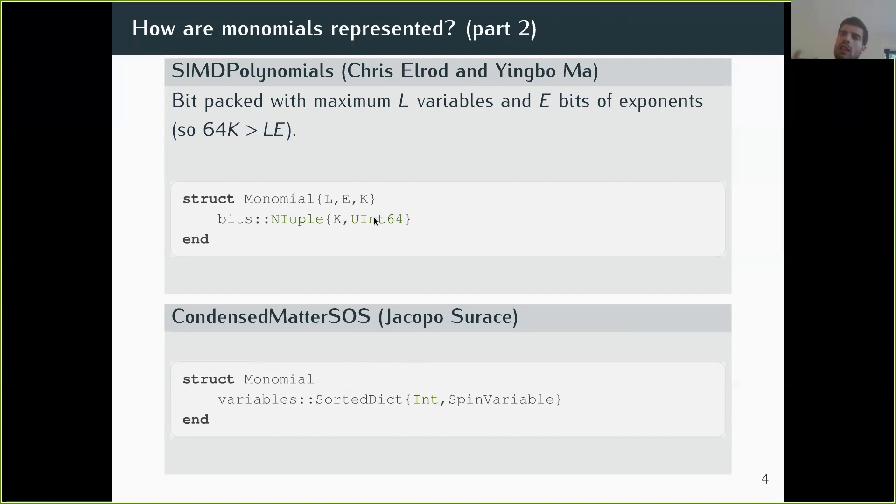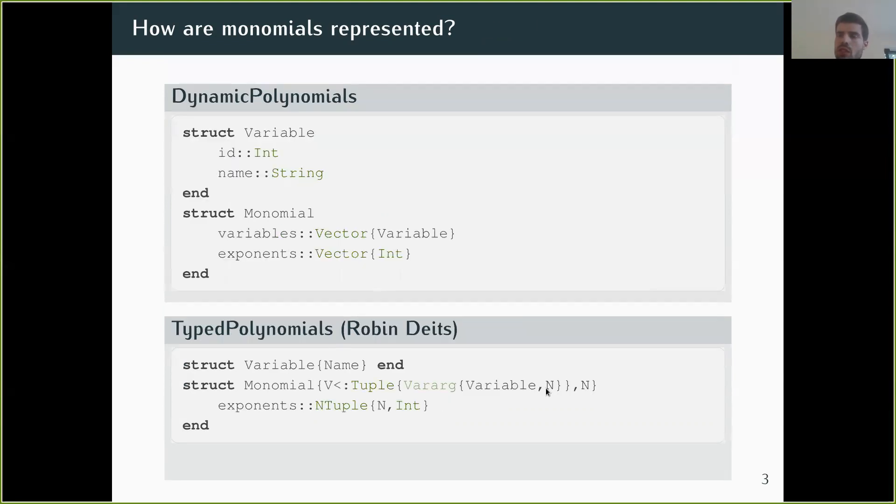And also, they assume that each variable will be represented by where it fits in this list of exponents. So you don't have to have this vector of variables that you would compare with the name at compile time.